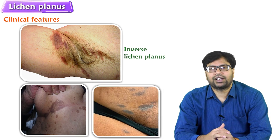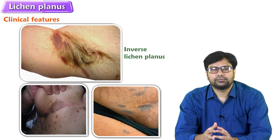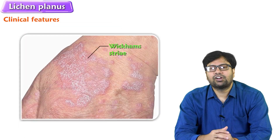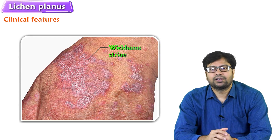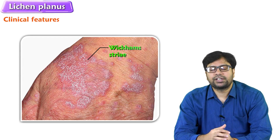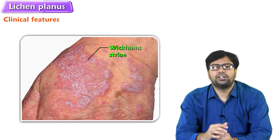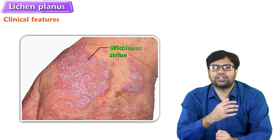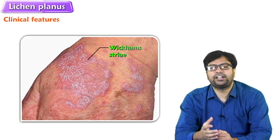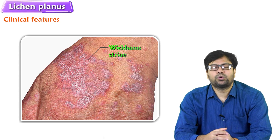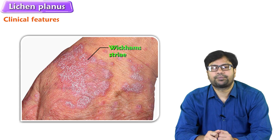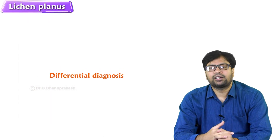Inverse lichen planus means lichen planus involving the flexors — that means axilla, inframammary folds, and groins. One more terminology I should mention is Wickham striae: chronic scratching may cause reticulate white lines on the lichen planus skin, which can only be visible through a hand lens.